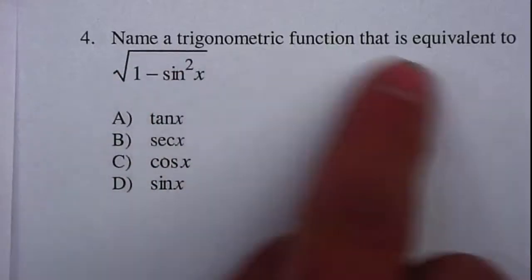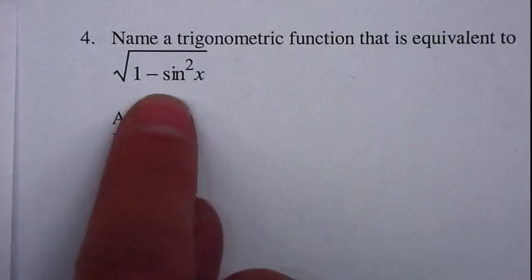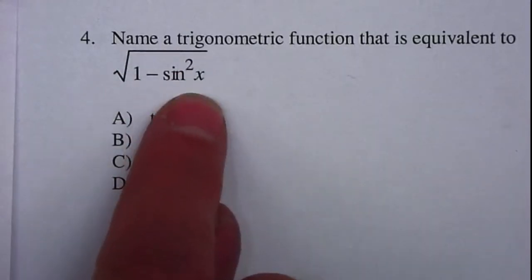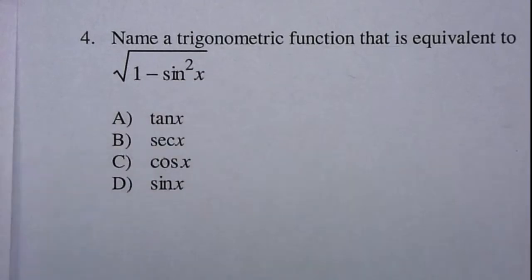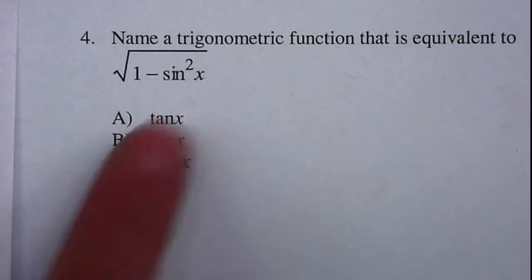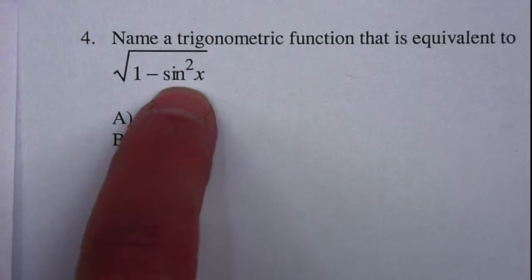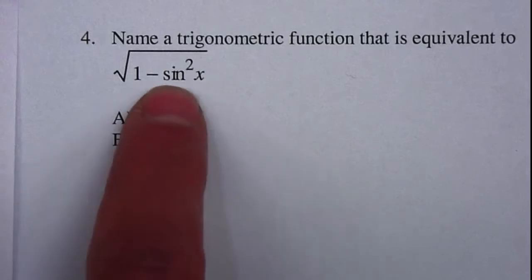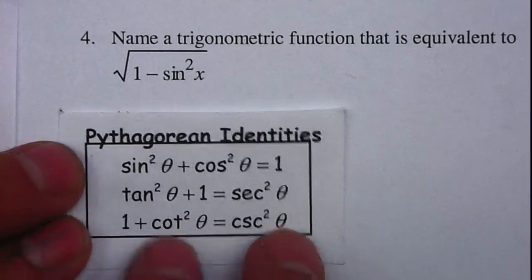Name a trig function that's equivalent to the square root of 1 minus sine squared of x. In this case, you should be able to recognize that we have a sine, and 1 minus sine squared will take us to the Pythagorean identity.